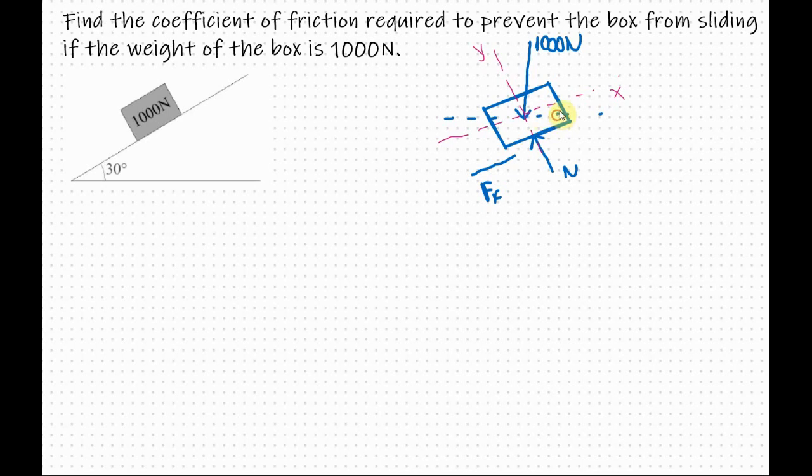So if this angle here is 30 degrees this one here is 60 degrees which means this one here is 30 degrees too. Now I will break this force into two components. The horizontal component here equals 1000 sine 30 and the vertical component is 1000 cosine 30.